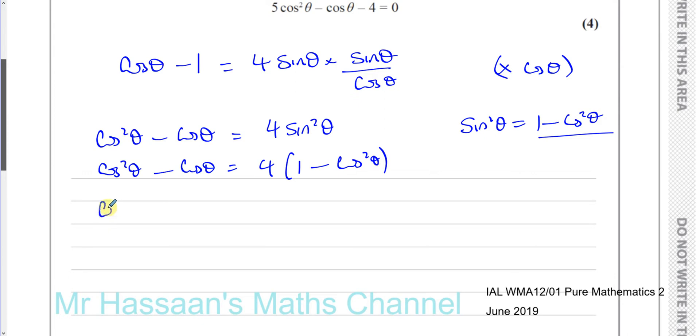So you've got now cosine squared theta minus cosine theta equals 4 minus 4 cosine squared theta. Now if we add 4 cosine squared thetas to both sides, you're going to get 5 cosine squared theta. And you've also already got minus cosine theta. And if you subtract 4 from both sides, you're going to get minus 4. And that leaves you with nothing on this side. And this is exactly what we had to show.